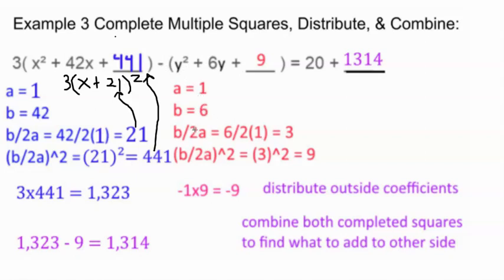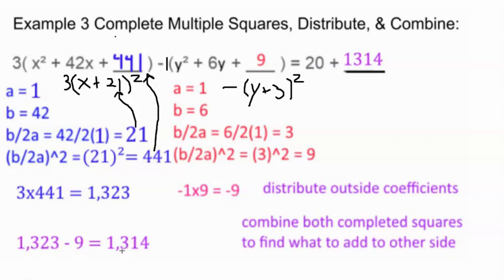For the red one, a is 1, b is 6, b/2a is 3, b/2a squared is 9. Factored, it would be negative(y + 3)². It doesn't matter what the variable is called — x, y, z, u, whatever. To get the other side, distribute and combine: 3 times 441 is 1,323. Negative 1 times 9 is negative 9. Combine those to get 1,314. That's what you add to the other side.